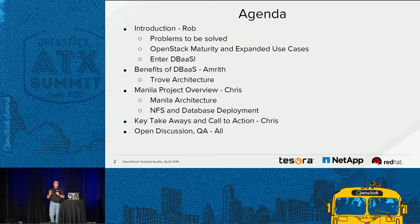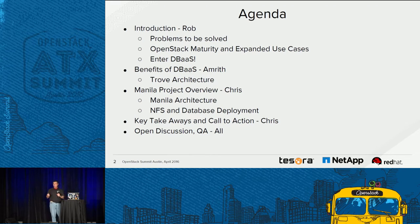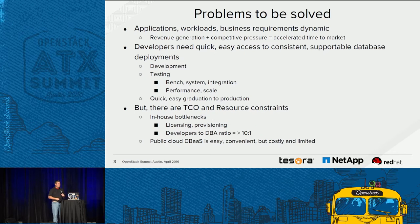We're going to save questions for the end and have an open discussion Q&A session. Our agenda: I'm Rob Young with Red Hat, I work with our OpenStack team as a technical product manager. I'll hand off to Amrith to talk about Trove architecture and the benefits of using Trove in public and hybrid cloud environments. Chris will then cover the Manila-specific storage option and architecture, and then we'll have key takeaways and open discussion.